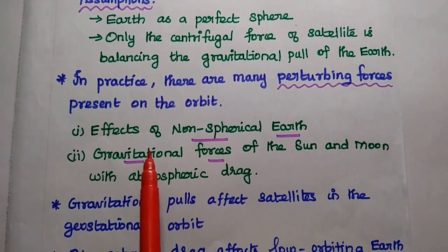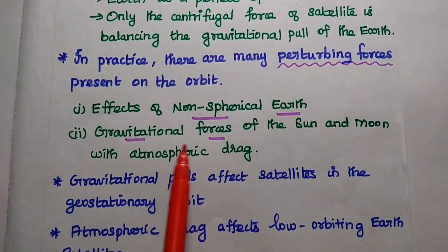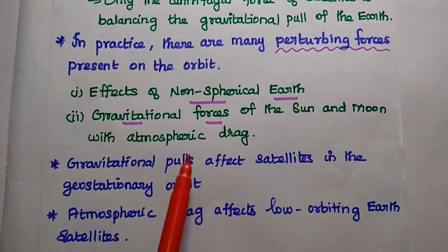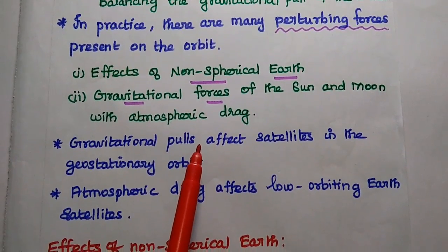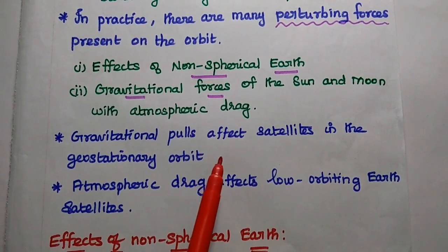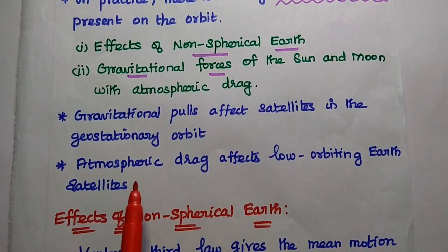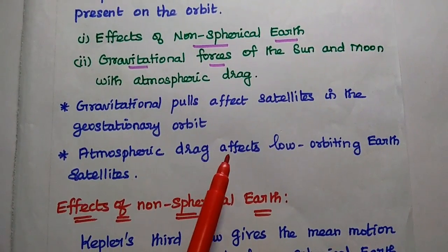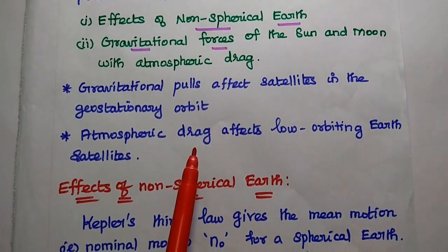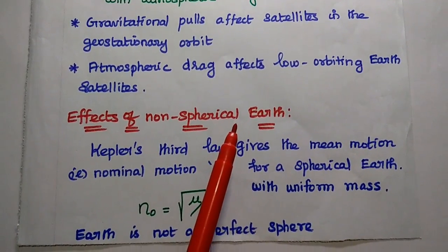The perturbing forces include: effects of non-spherical Earth, gravitational forces of the Sun and Moon, and atmospheric drag. The gravitational pulls affect the satellites in the geostationary orbit, and have negligible effect on low Earth orbiting satellites. At the same time, atmospheric drag affects the low Earth orbiting satellites but not the geostationary orbit satellites. Let's discuss each point in detail.